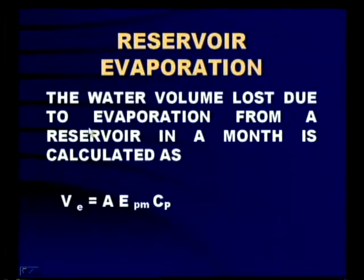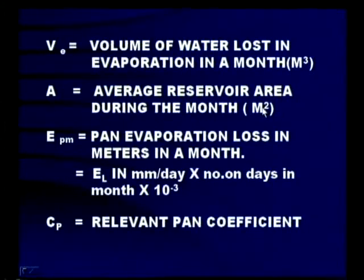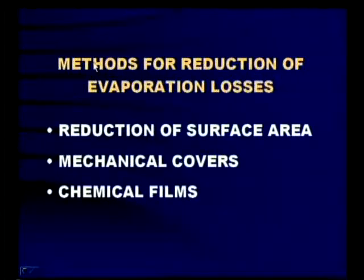Reservoir evaporation is estimated by: Ve = A × Epm × Cp, where Ve is the volume of water lost in evaporation in a month in cubic meters, A is the average reservoir area during the month in square meters, Epm is pan evaporation loss in meters in a month calculated as El (mm/day) × number of days in a month × 10⁻³, and Cp is the relevant pan coefficient — a correction factor depending on the type of evaporometer.